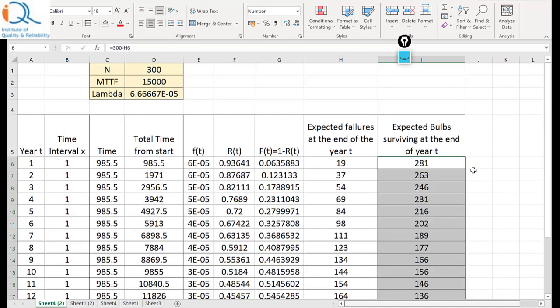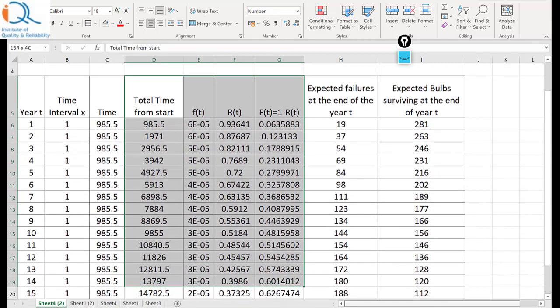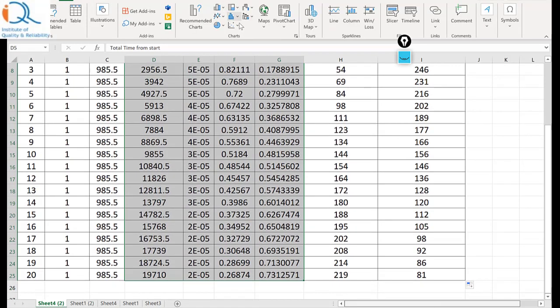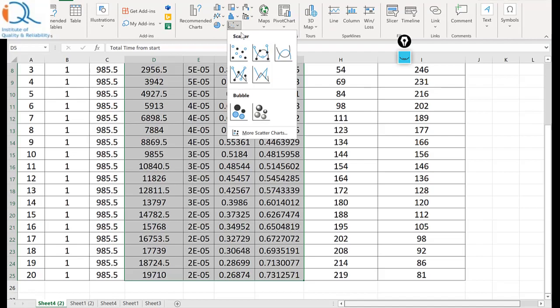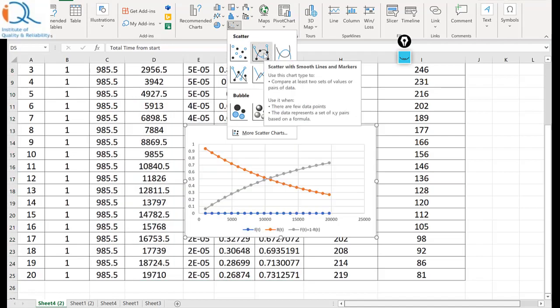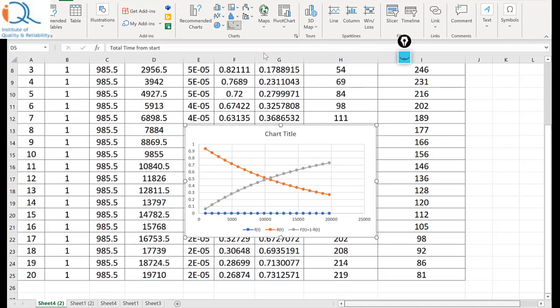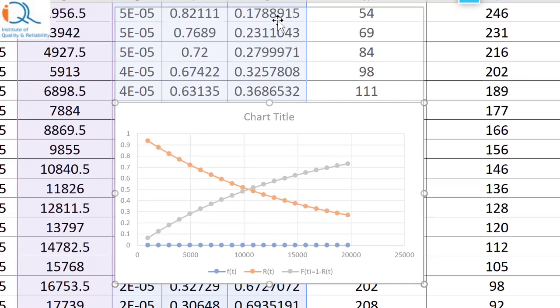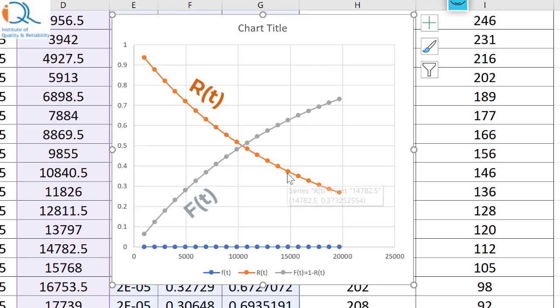Now if you plot the time t versus f of t, r of t and f of t you could get the three functions. The blue colored graph is of probability density function pdf but it is too small so you can't see the pattern here. The orange color line shows the reliability function while the gray color line shows the cumulative failure function.